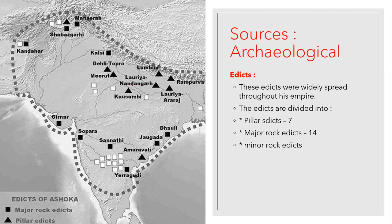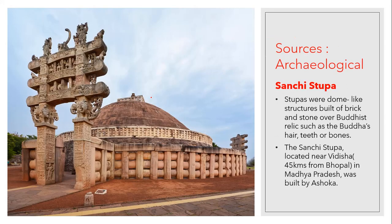The next archaeological evidence is the Sanchi Stupa. Stupas are dome-like structures built of brick and stone over Buddhist relics such as Buddha's hair, teeth, or bones. These relics were kept under the dome as a memory of the Buddha.